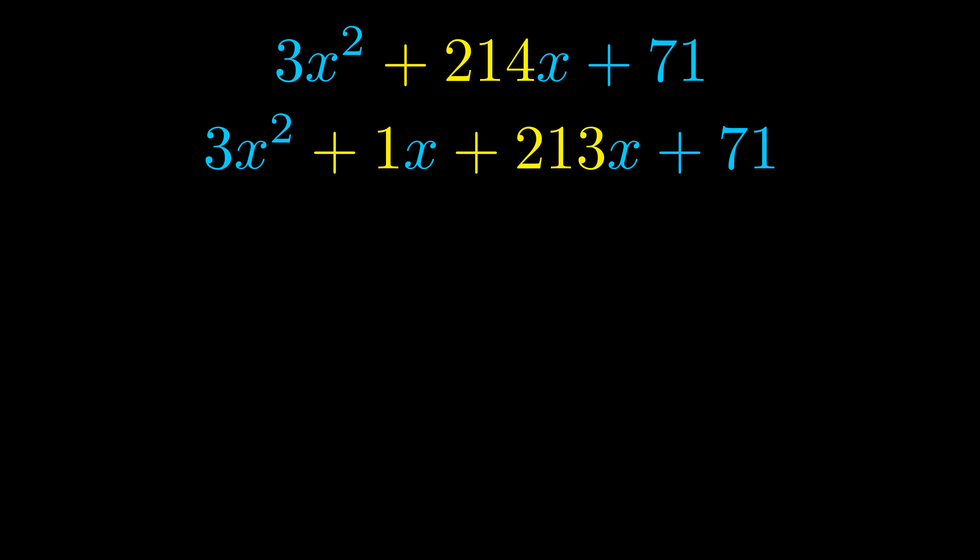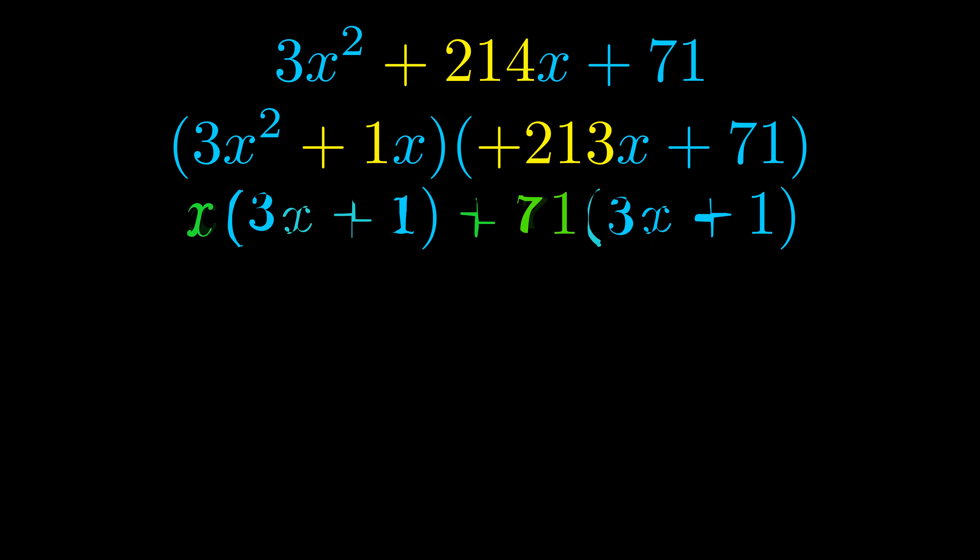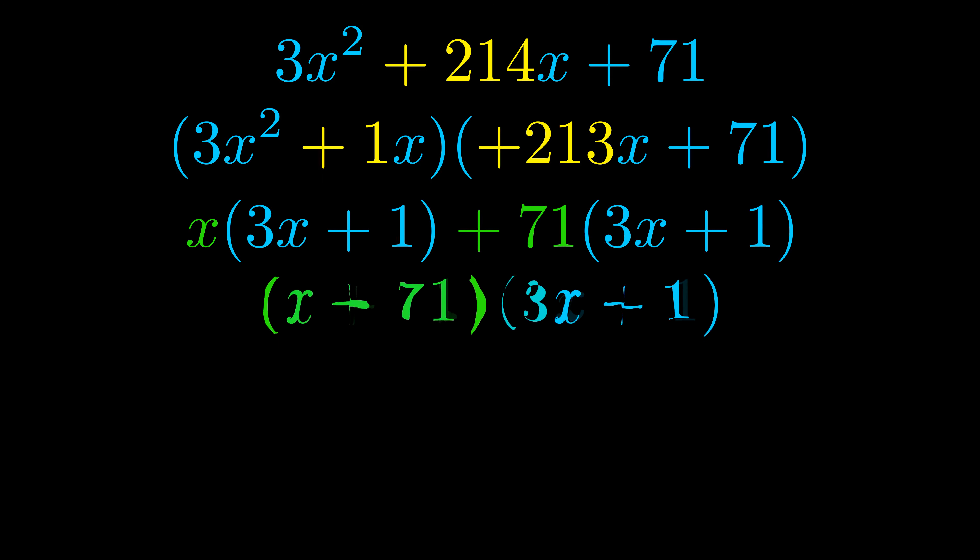Once we've done this we go ahead and we put parentheses around the first term and the last term and we do that so that we can take the greatest common factor out of both terms. We can see the greatest common factor is now outside in green. Notice also how what remains inside of the parentheses is the same in both cases. The blue values are the same.